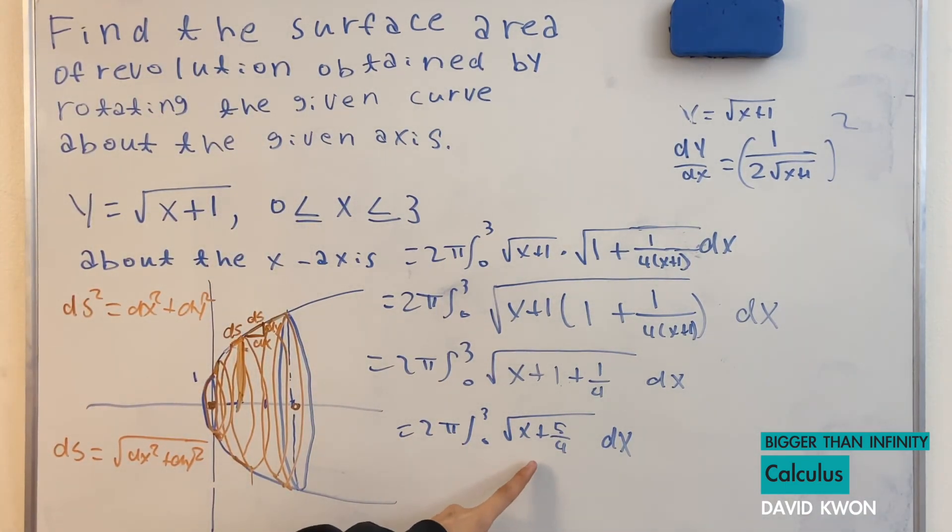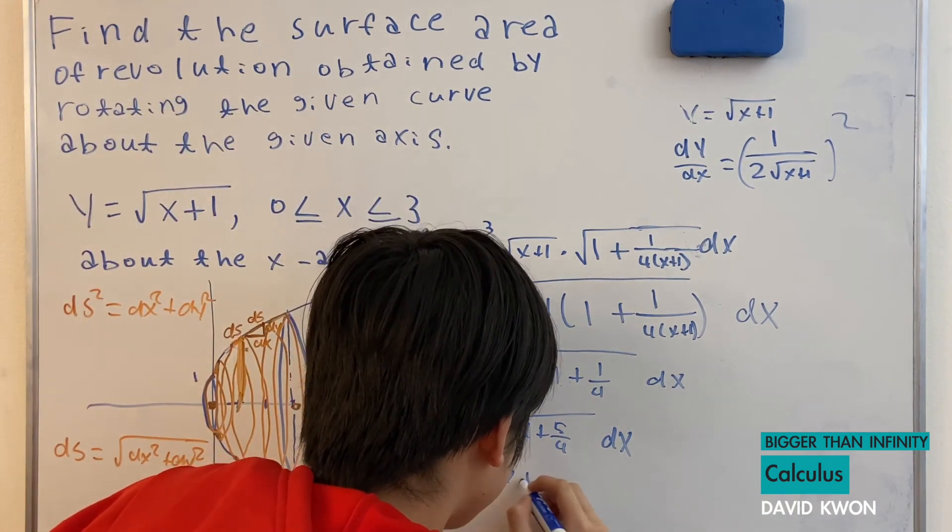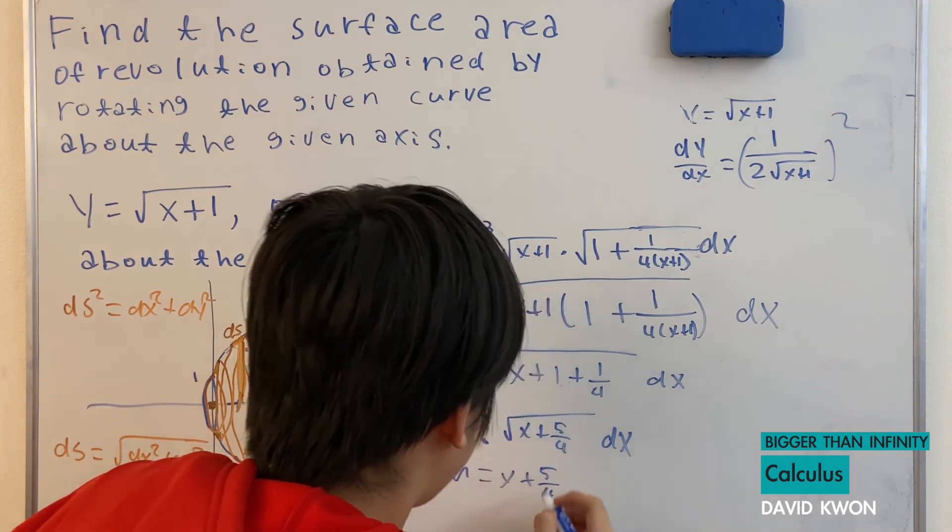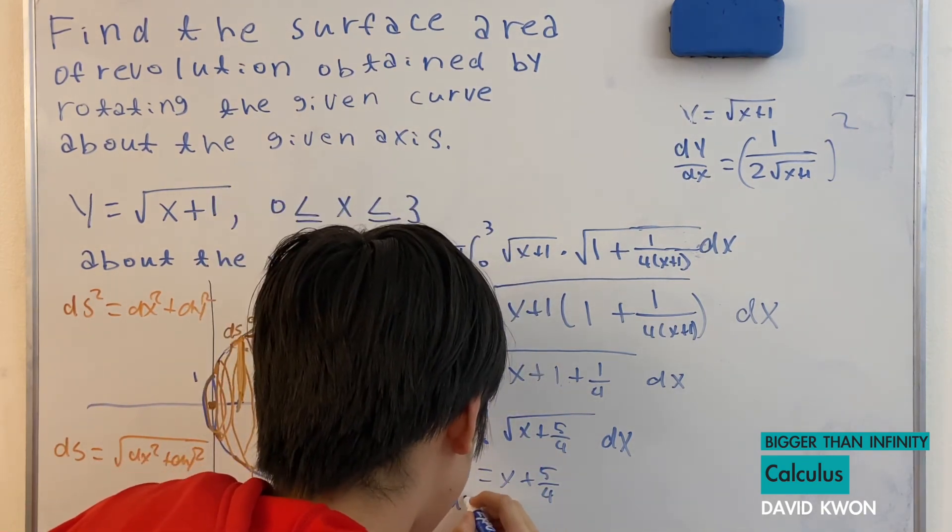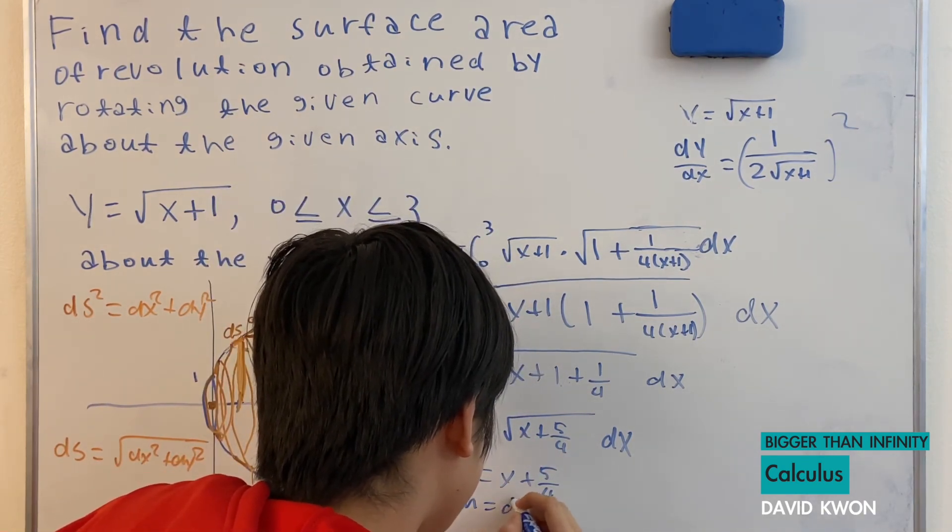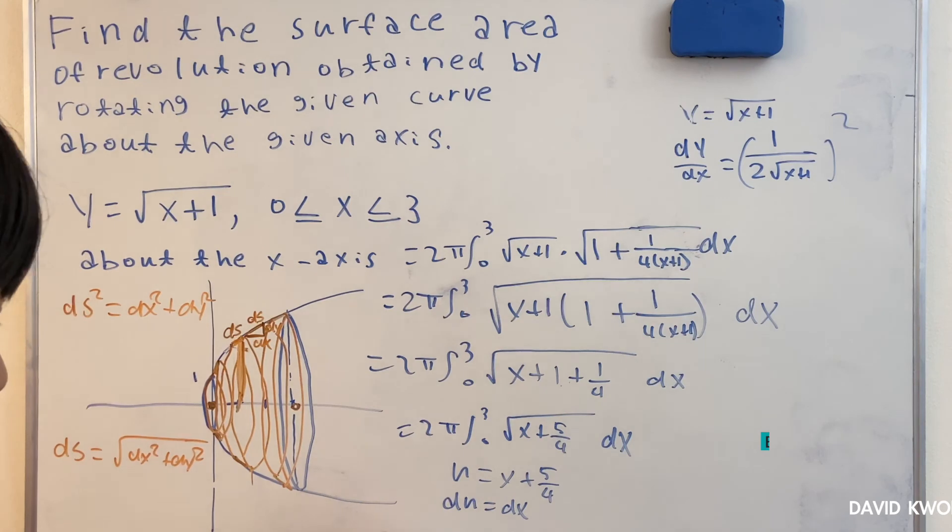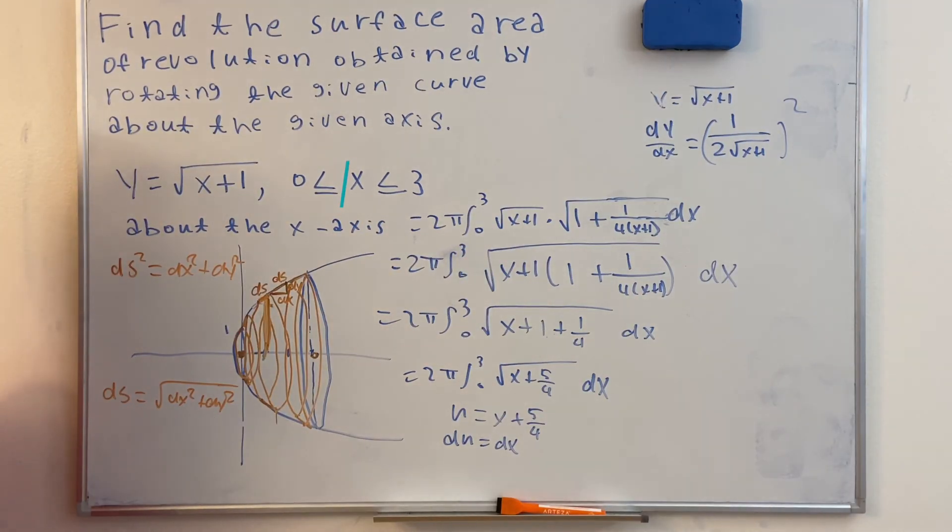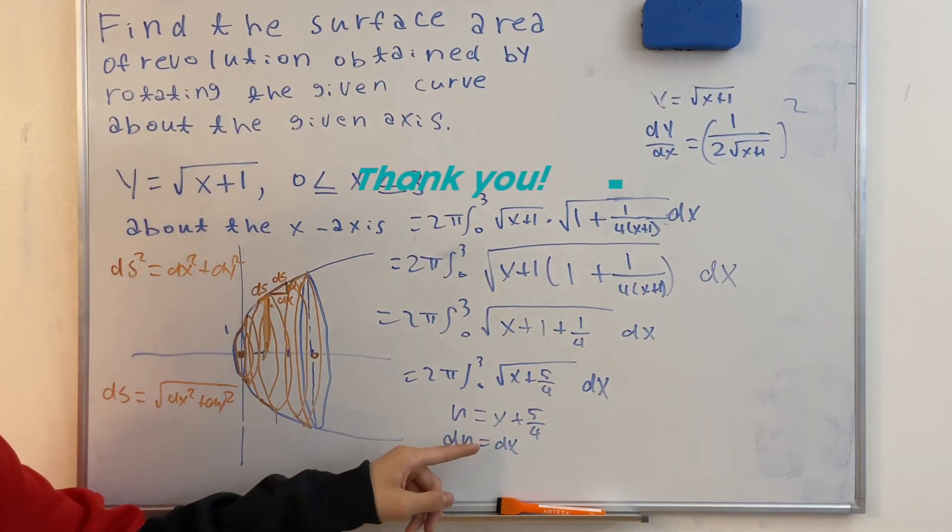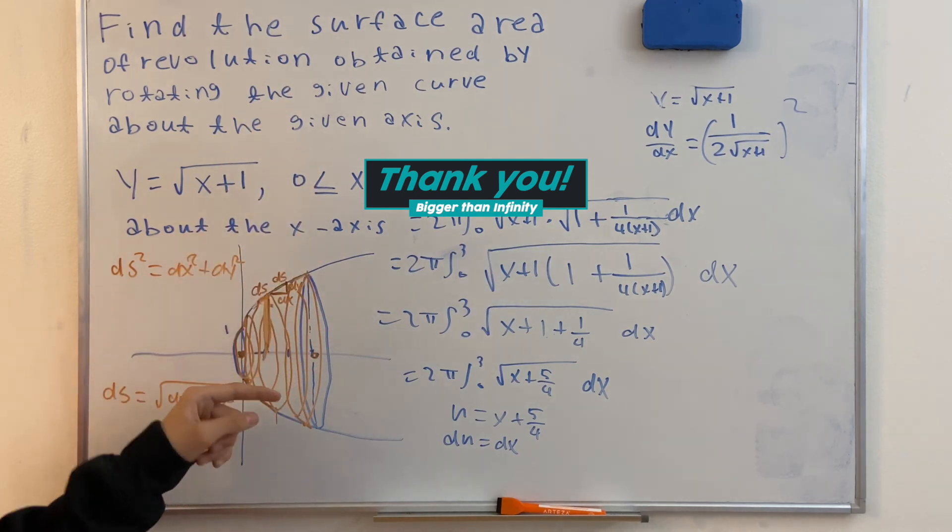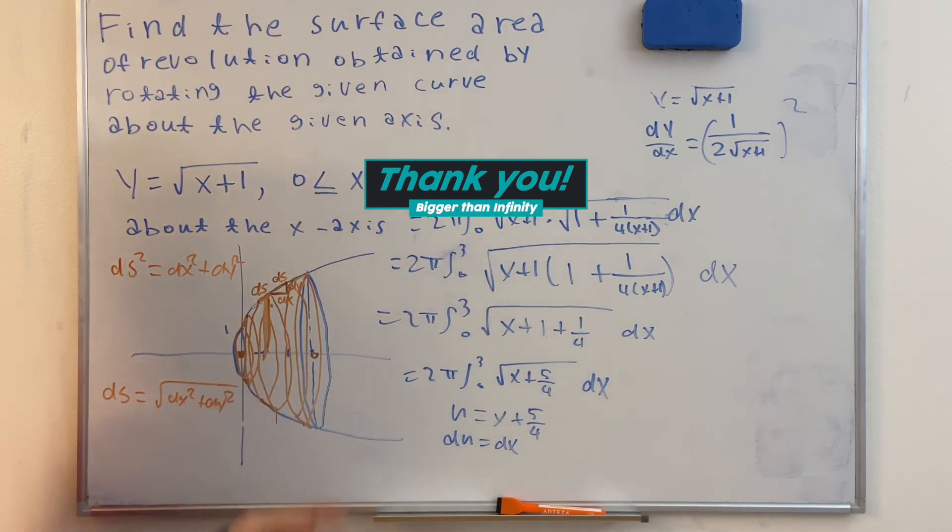u is equal to x plus 5 over 4, excuse me. And du is going to be just dx. So I will leave you guys up to this point where you guys can solve it on your own. So whatever you will get is the surface area of this. From the point 0 to 3. Bye bye.